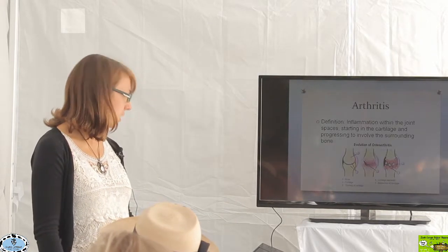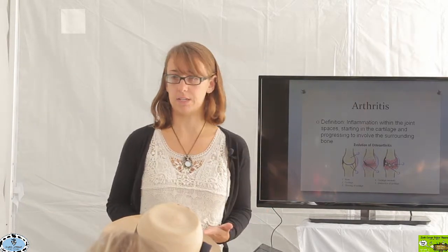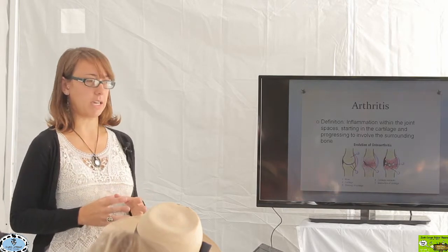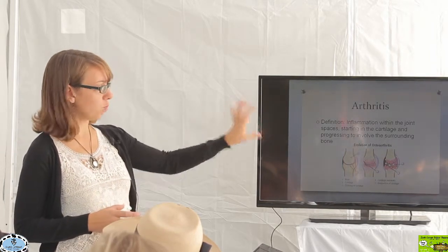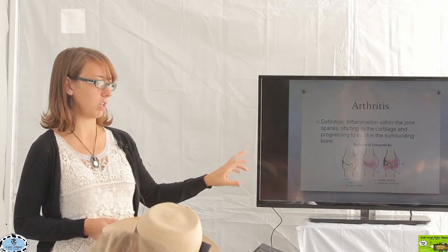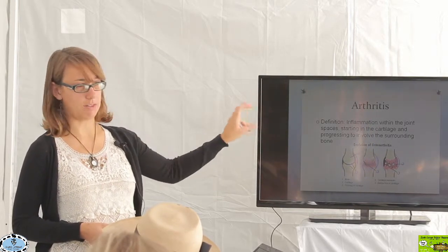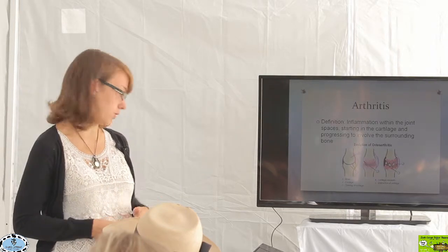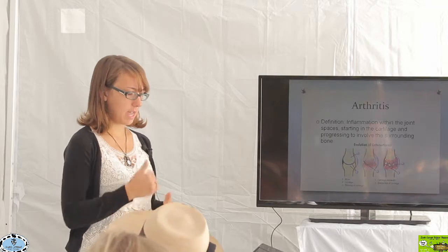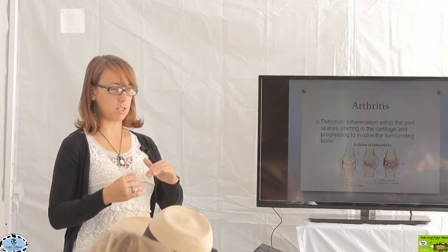To start off with arthritis: what is arthritis? The definition is inflammation in the joint spaces. If you look at a word ending in '-itis,' that means inflammation. 'Arth' refers to the joint — so arthritis means inflammation of the joint. Arthritis has a progression through very mild stages, and as it gets worse and worse, it advances into severe stages.